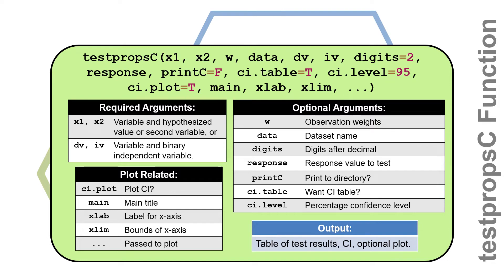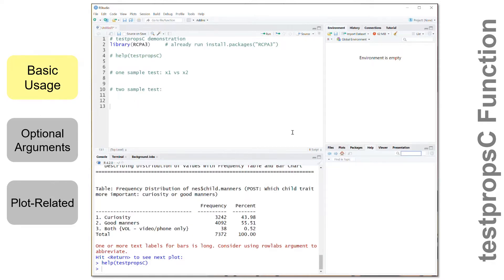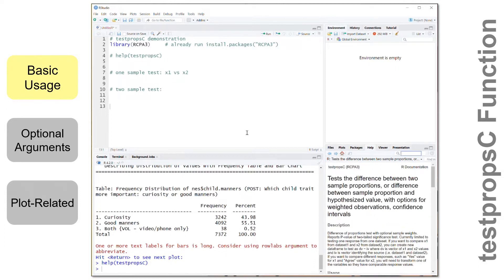To learn how to use the testpropc function, let's work through some examples. We can use testpropc to test hypotheses about proportions, and this function can be used for a one-sample test or a two-sample test. I'm going to start with the one-sample test and also demonstrate the two-sample tests. To conduct a one-sample test, we're comparing a sample proportion against a hypothesized value to see if the hypothesized value is plausible. I'm going to do this with a variable in the NES dataset involving important traits for children.